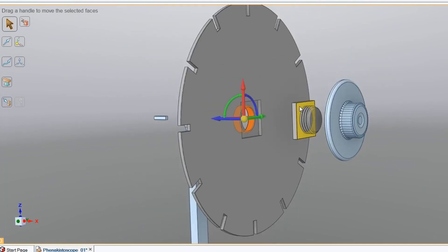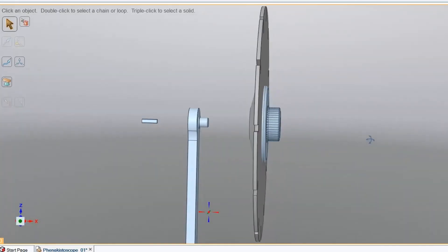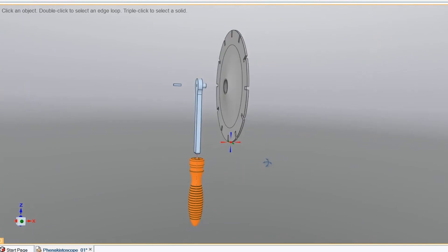The squared disc guide ensures that the animation disc always gets placed in the correct orientation for viewing. The knob clamps the disc in place, and the handle here makes it super comfortable to hold.